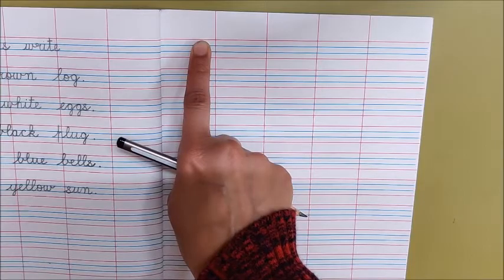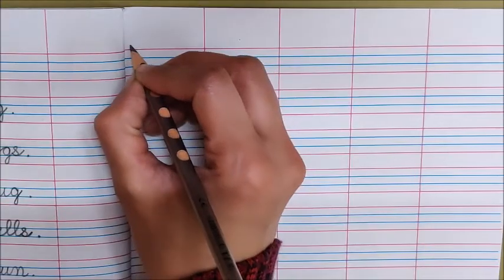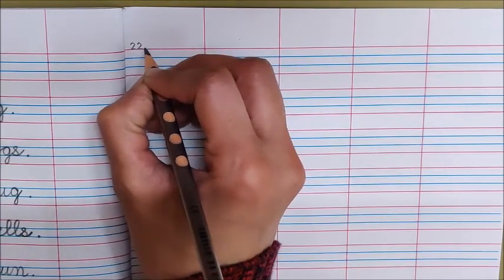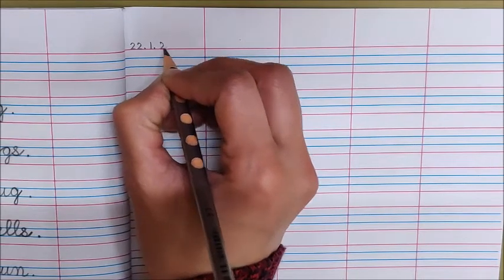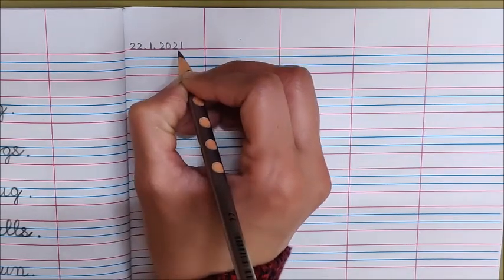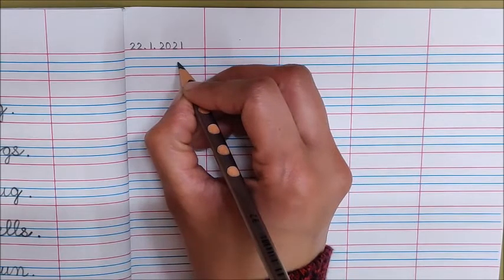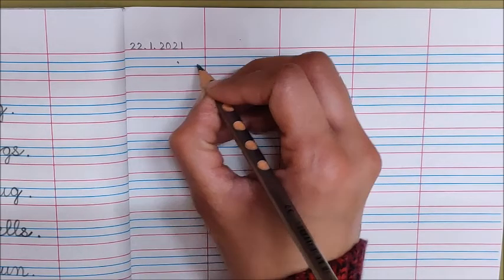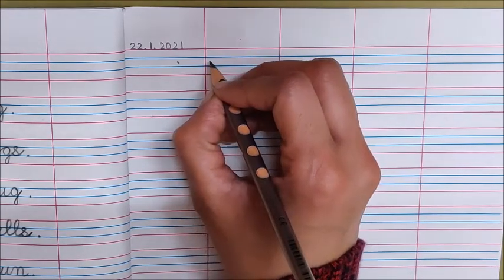Today is January 22. 22 dot 1 dot 2021. Now below the date, put a dot and write down this with me.